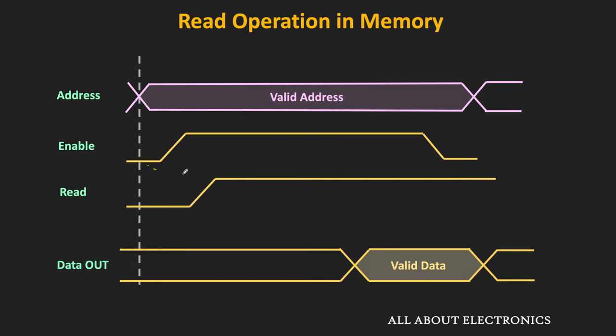Once the enable signal is also settled, the read signal is made high. As soon as the read signal is made high, the read operation will be performed in the memory. After some delay, valid data from the memory will be available on the output, and the CPU can then read this data.